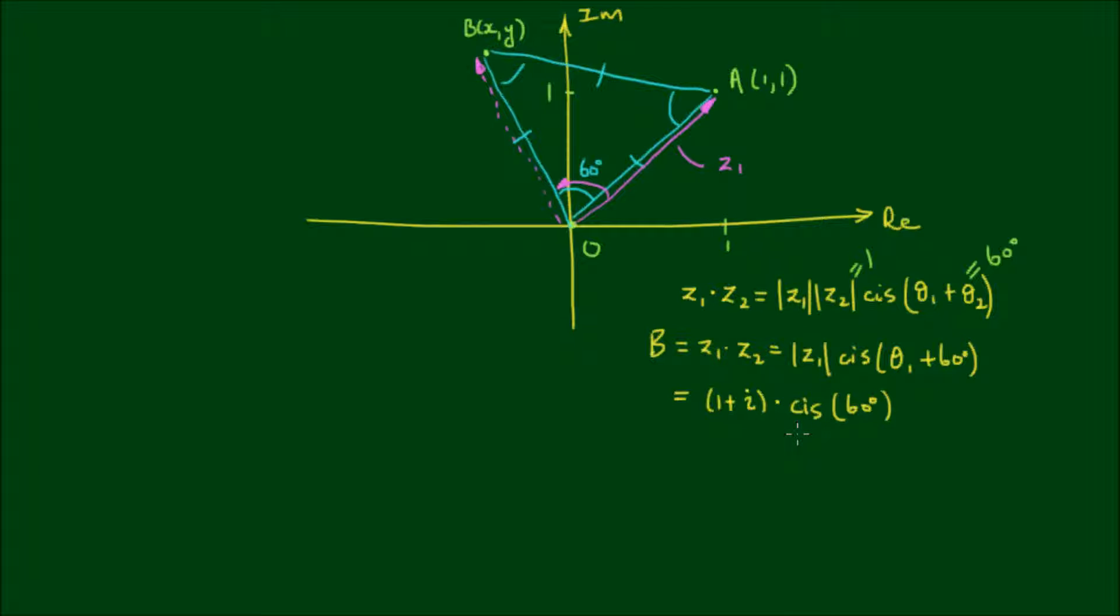And of course to perform the multiplication, I have to convert this into Cartesian form. So we have 1 plus i by the cosine of 60 degrees plus i sine of 60 degrees. And the cosine of 60 degrees is equal to 1 half, and the sine is root 3 over 2, and this is multiplied by Z1, which is 1 plus i.